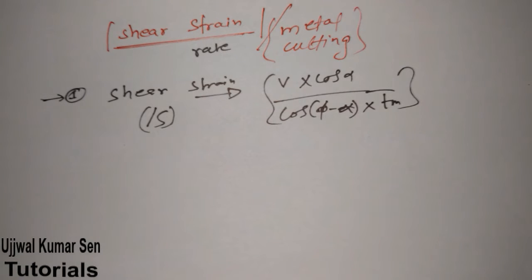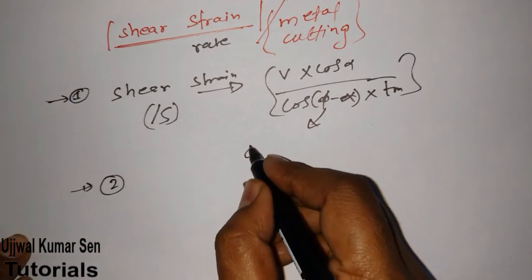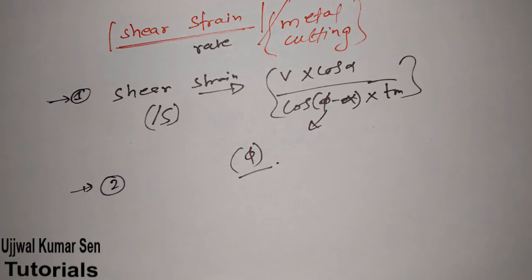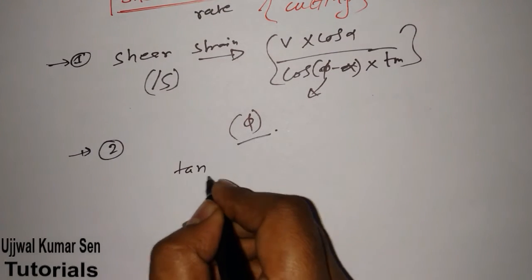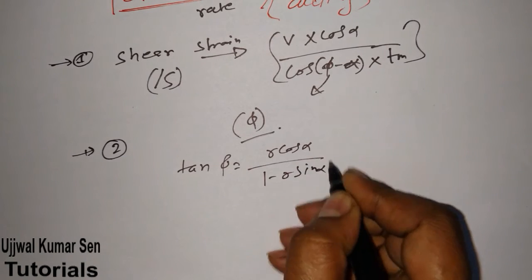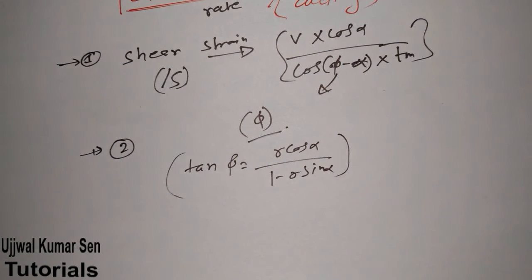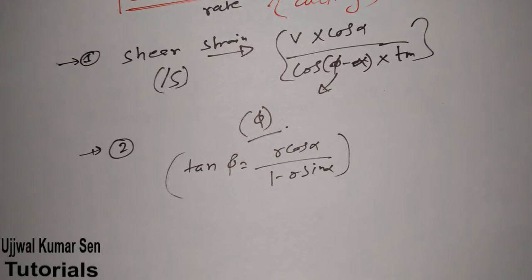In the examination, you also need to know how to find the shear plane angle. The formula is: tan φ = r·cos α / (1 - r·sin α), where r is the chip thickness ratio. I've already shared what chip thickness ratio, alpha, and phi mean, but I'm sharing again because it's directly related to this problem.